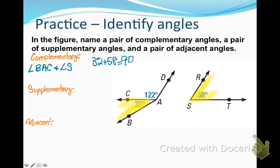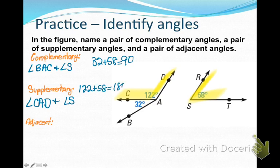The reason that these are complementary angles is because 32 plus 58 equals 90 degrees, and that's the definition of a complementary angle. For supplementary angles, angle CAD and angle S are supplementary because 122 plus 58 equals 180, which is the definition of supplementary angles.